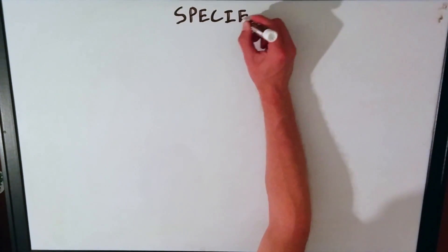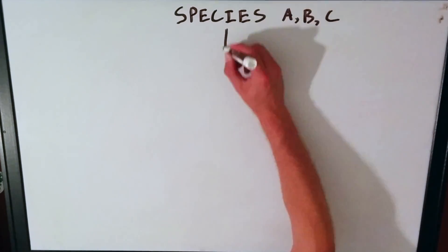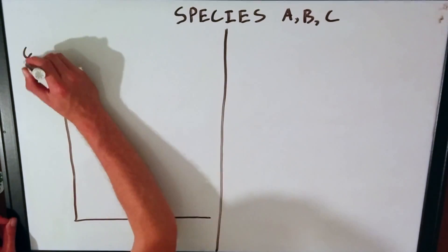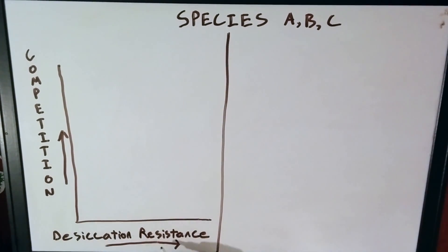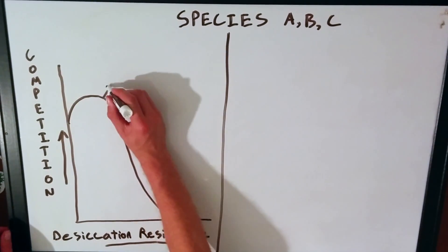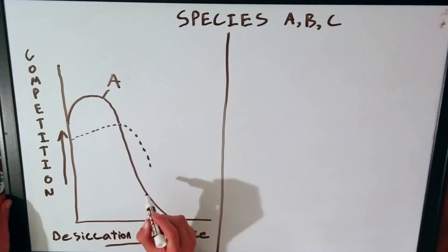Suppose that you have three species, A, B, and C, each living in the three intertidal zones. Species A spends most of its time underwater, as it is a good competitor but cannot withstand being out of the water because it will dry out.